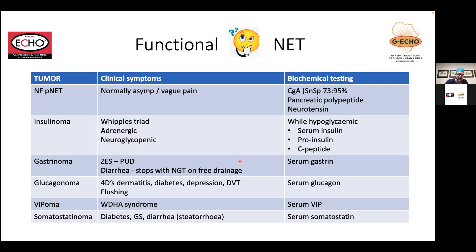Non-functional tumor symptoms are generally vague abdominal pain or incidental discovery. The most commonly used biochemical marker is chromogranin A — it's the most sensitive. The rest depend on what peptide or amine is being secreted and the functionality thereof.